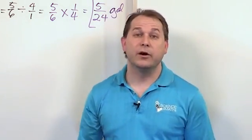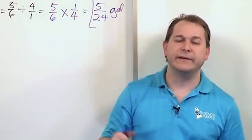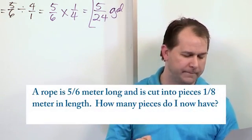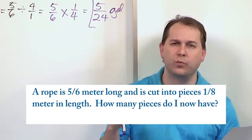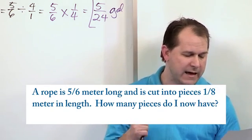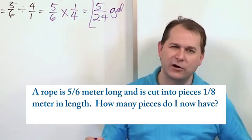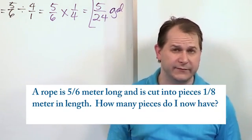Now the next problem is also really practical because we're dividing a piece of rope. It says a rope is five sixths of a meter long and is cut into pieces one eighth meter in length. How many pieces do I have? So I have a rope. I've measured it. It's not quite a whole meter long. It's five sixths of a meter long.